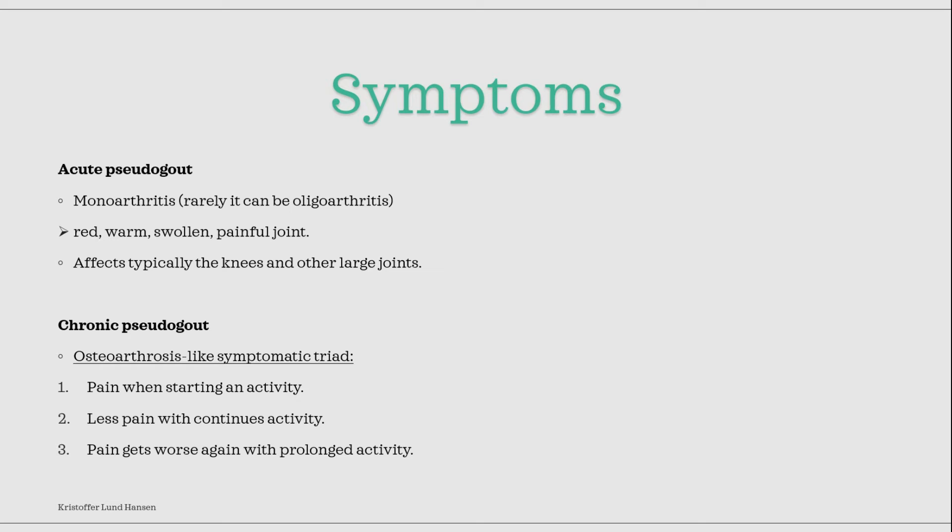Over time, chronic pseudogout can develop. This has very similar symptoms to that of osteoarthrosis with the classical activity triad. First, when someone starts a movement, in the first seconds there is quite a lot of pain. Second, when movement continues, there will be less and less pain over time. And lastly, if the activity goes on for quite some time, it will become more painful again.